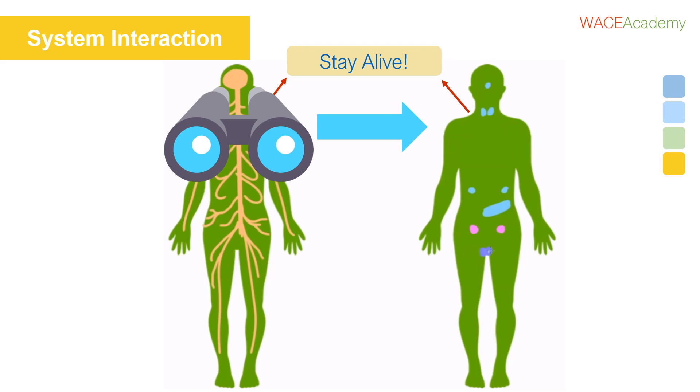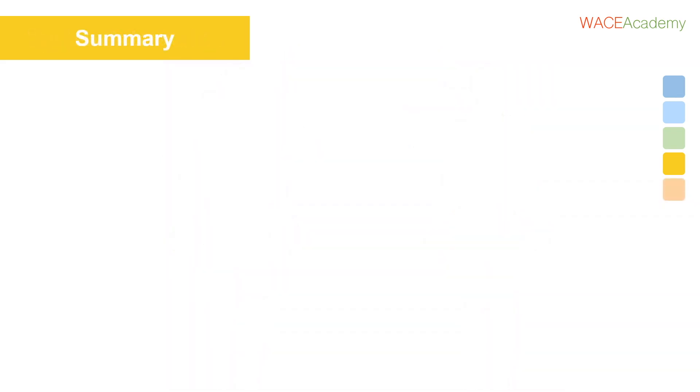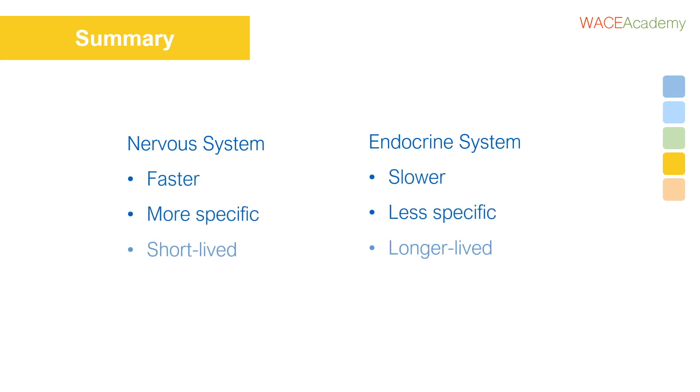That's the end of today's content on the endocrine system versus the nervous system. Today we covered messages from the nervous system are faster, more specific, and shorter-lived than messages from the endocrine system. This is because nervous system messages are electrical impulses, whereas endocrine system messages are chemical secretions.